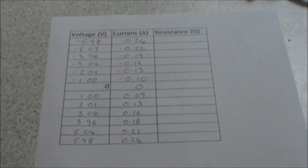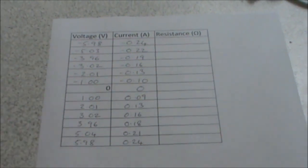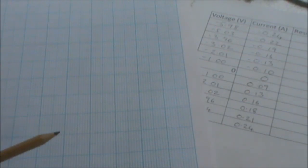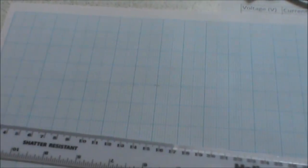We're now going to plot a graph of current and resistance. In order to plot our results, we need a sharp pencil and a long ruler. The first thing that we need to do is decide on a suitable scale. My voltage, being the independent variable, goes on the x-axis and goes from minus 6 to plus 6. And my current on the y-axis goes from minus 0.25 to plus 0.25.